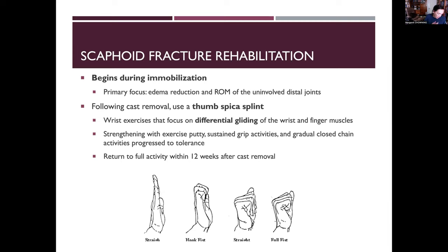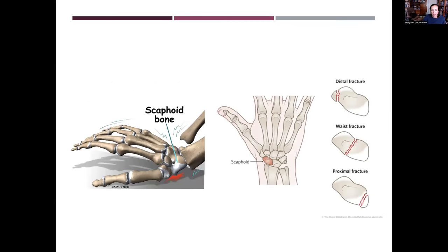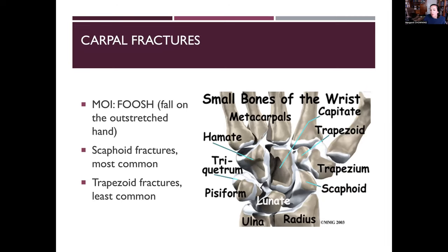The lunate bone, found in the proximal carpal row medial to the scaphoid, is susceptible to volar dislocation into the carpal tunnel during a FOOSH. It can cause median nerve damage symptoms similar to carpal tunnel syndrome. A patient may present as if they have carpal tunnel but with a mechanism of injury involving a fall on an outstretched hand.